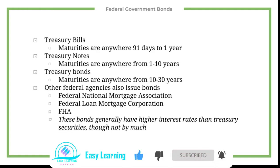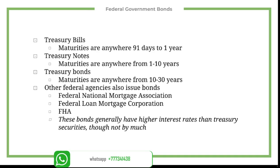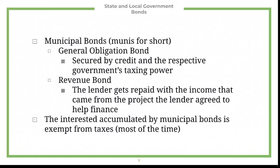The Federal National Mortgage Association, the FHA, and the Federal Home Loan Mortgage Corporation can all issue bonds, as can many other federal agencies. Typically these have a higher interest rate than treasury securities, but not by a whole lot.